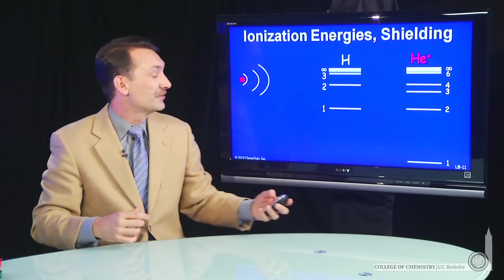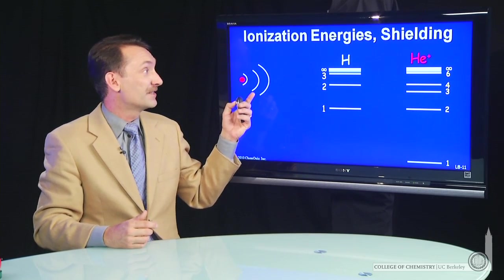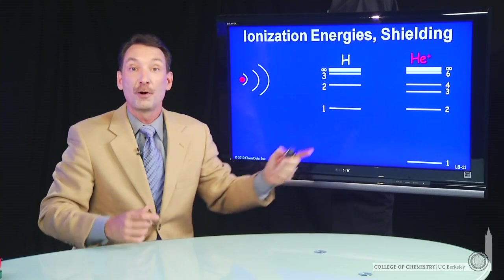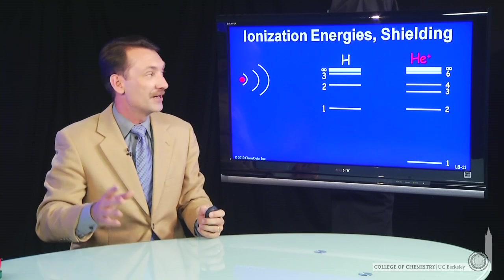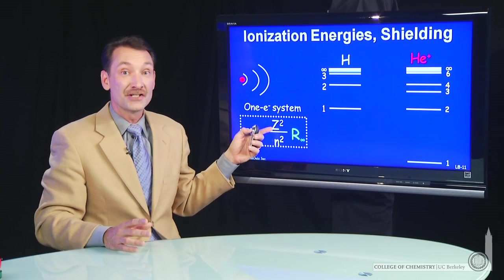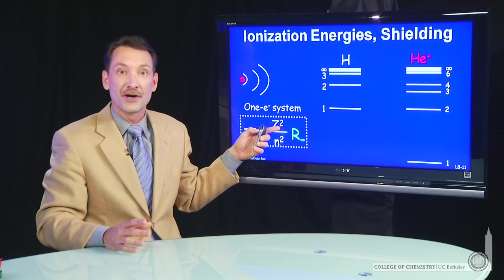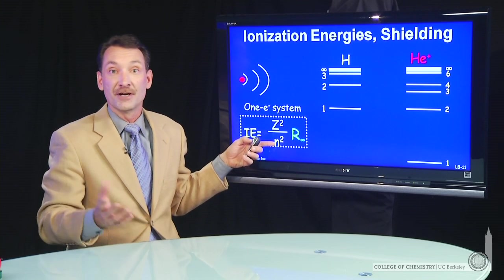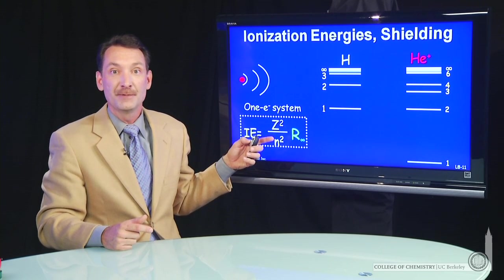Let's look at that. So if we have electrons, hydrogen and helium plus, those are both one-electron systems. And they're very easy to understand. Their ionization energy will just be z squared, the charge on the nucleus, over n, whichever orbital the electron happens to be in.